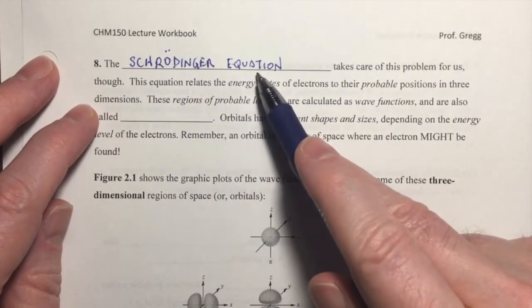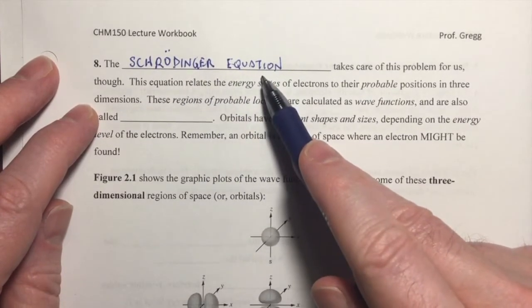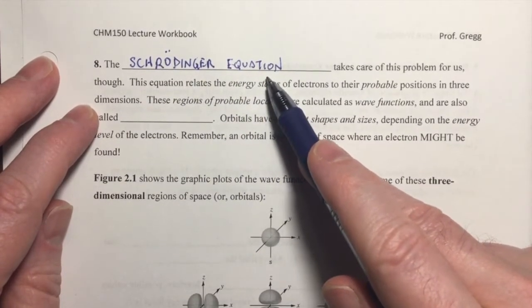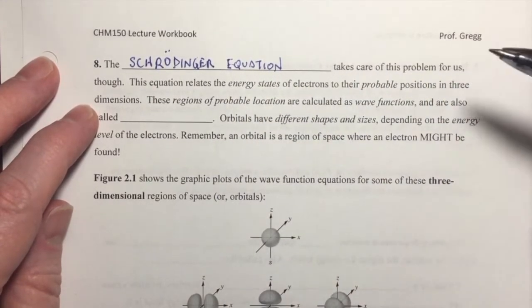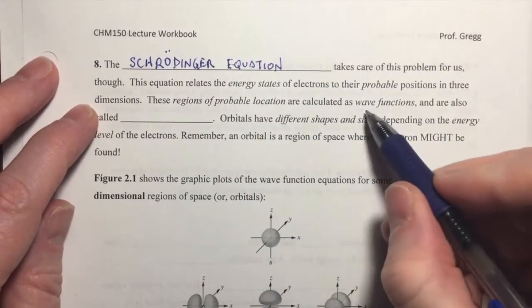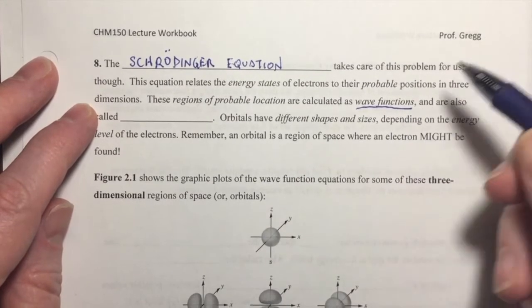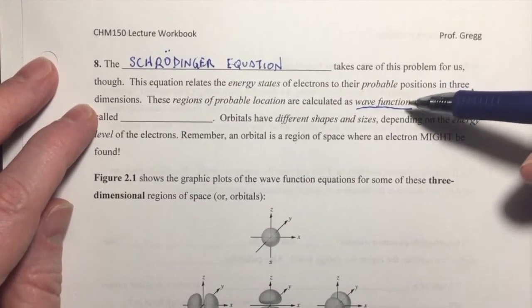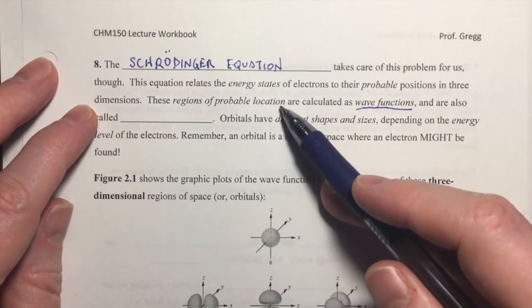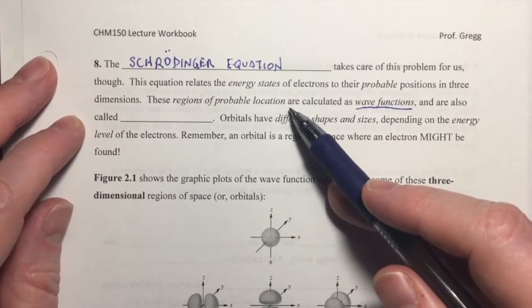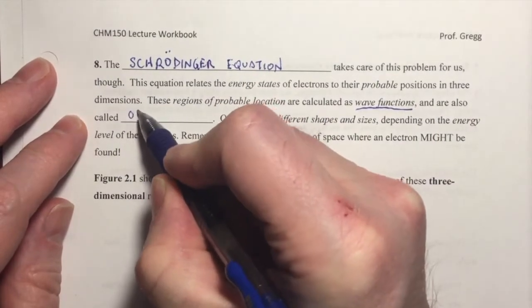And there was another fellow named Max Born, who took the Schrödinger equation and basically squared it. And when you take the square of the wave function, if you take the square of the wave function, then you end up getting the region of a probable location where an electron might be, also called orbitals.